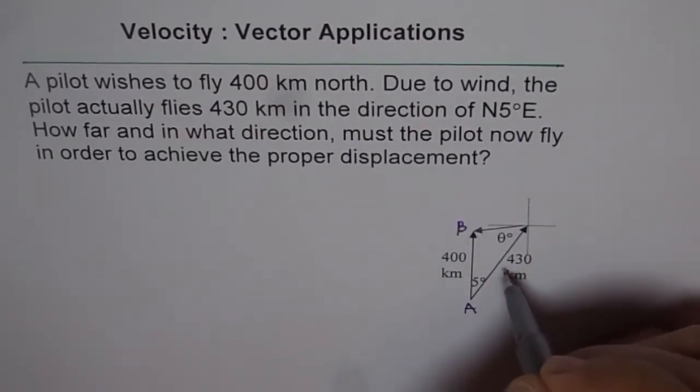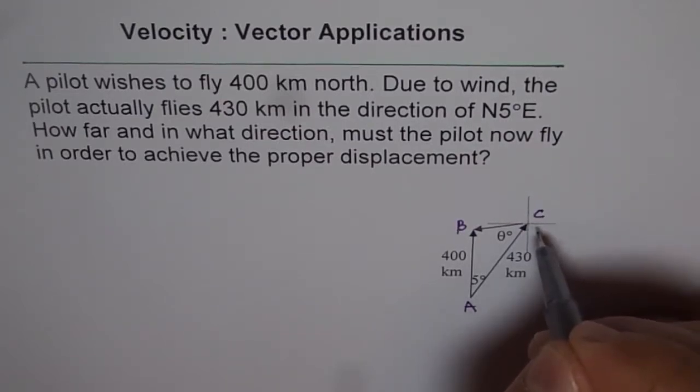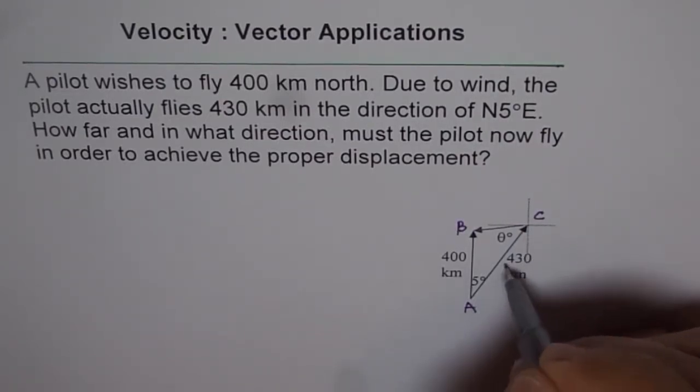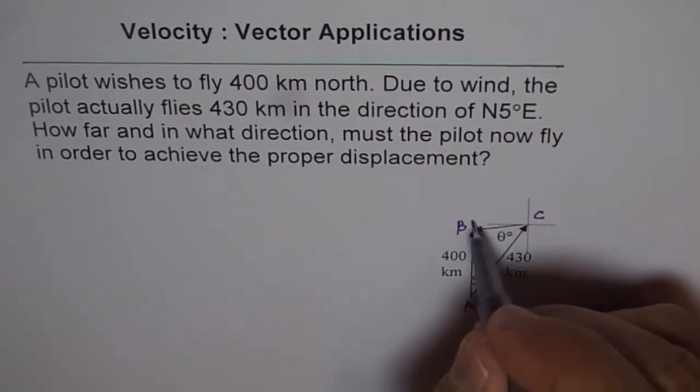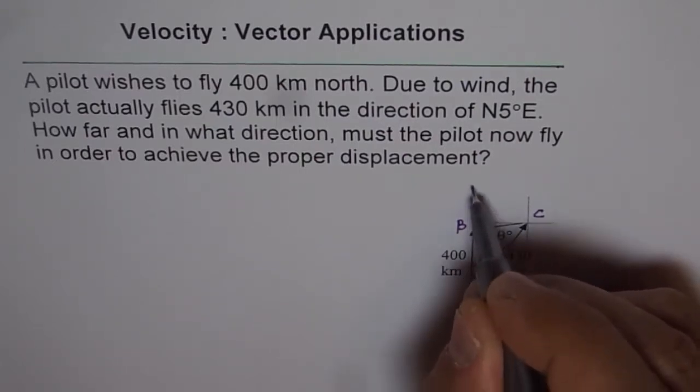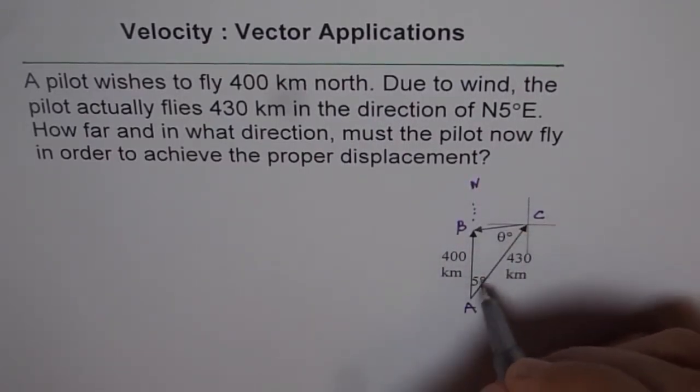But because of the wind, the pilot reaches in this direction, it reaches point C which is 430 km away and 5 degrees east of north. We will assume this to be north. And the plane actually goes in this direction which is 5 degrees east of north.